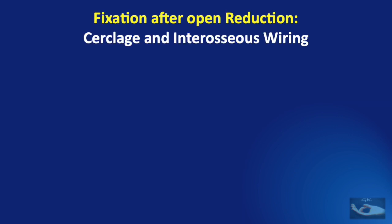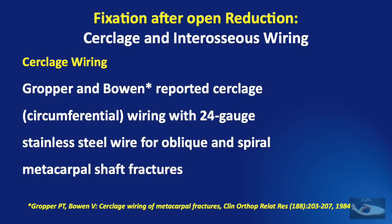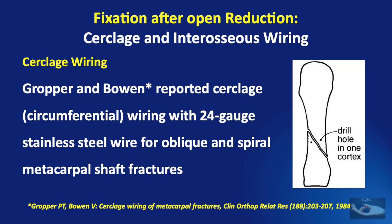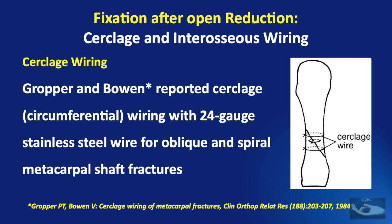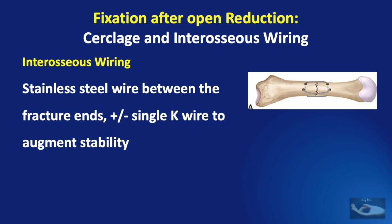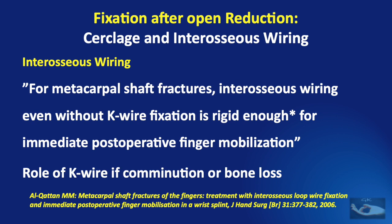Cerclage wiring, described in 1984, uses 24-gauge stainless steel wire for oblique and spiral metacarpal shaft fractures. Drill holes are passed in a single cortex both proximal and distal to the fracture, and a stainless steel wire goes around the entire circumference of the bone to hold it in place. Intraosseous wiring uses stainless steel wire between the fracture ends, possibly along with a single K-wire to augment stability, in a 90-90 configuration or two parallel constructs. A study stated that intraosseous wiring alone — even without K-wire fixation — is rigid enough for immediate post-operative finger mobilization; K-wire would only be required if there was comminution or bone loss.